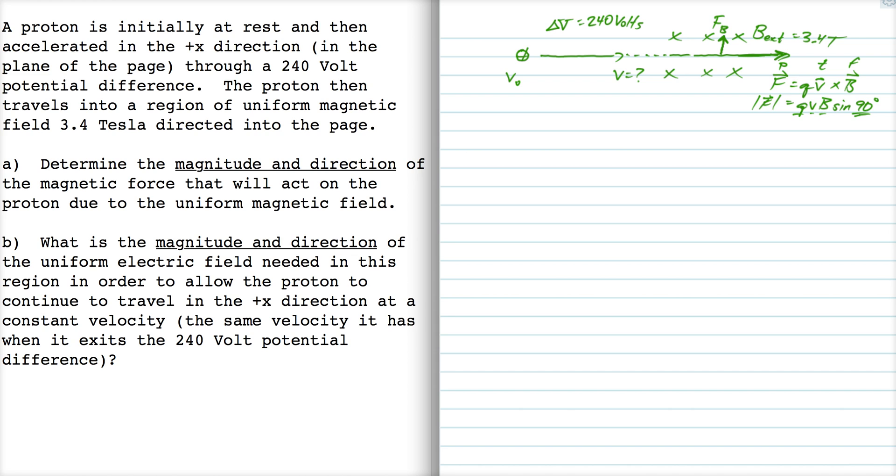How do we do that? We have to use work energy. We say the sum of the works done by all the forces on the proton is equal to the work done by the electric force and that's equal to the change of kinetic energy.